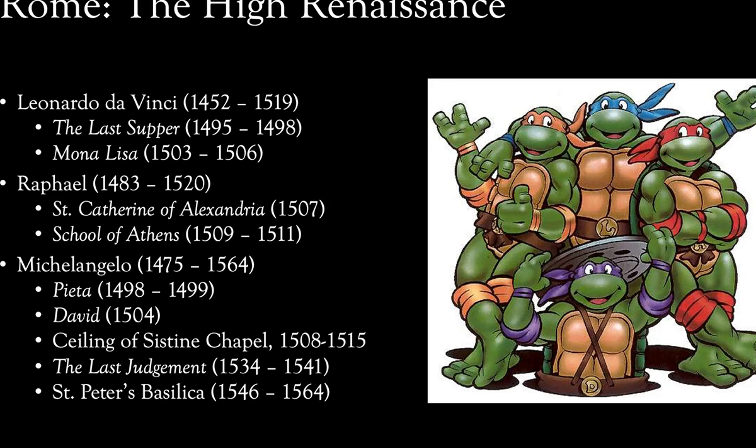That brings us now to a period known as the High Renaissance, which takes place more in the city of Rome. Florence is the birthplace and home of the early Renaissance, particularly in the Quattrocento — the 1400s. But by the late 1400s and early 1500s, the cultural center of the Renaissance shifted from Florence to Rome. One of the reasons for this shift is that the Catholic Church got involved in commissioning Renaissance art, which is why Rome became the new center of the Renaissance in the early 16th century.